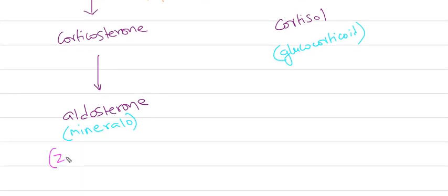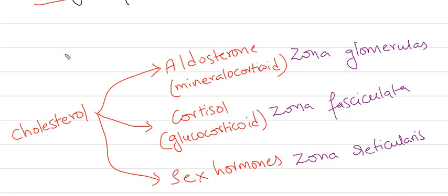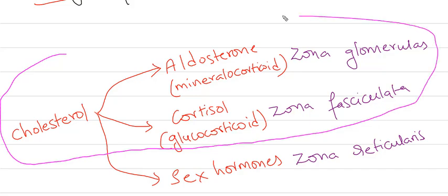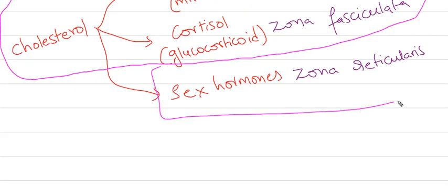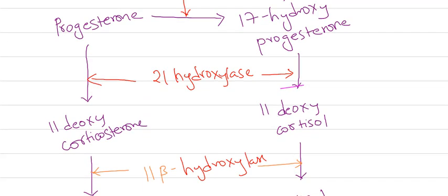To summarize the zona locations: aldosterone is formed in the zona glomerulosa, and cortisol is formed in the zona fasciculata. We have now completed the cortisol and aldosterone pathways and will next look at how sex hormones are formed.